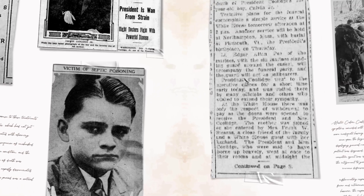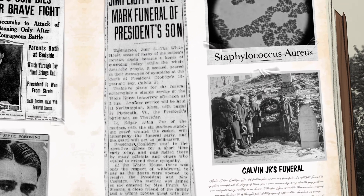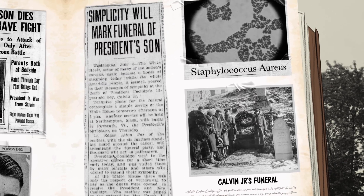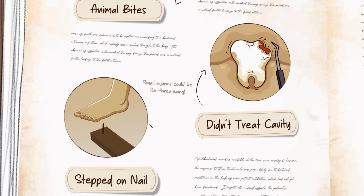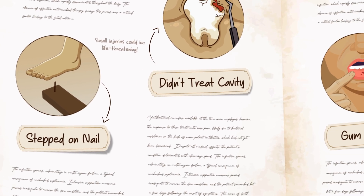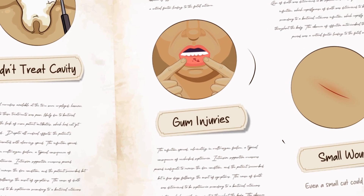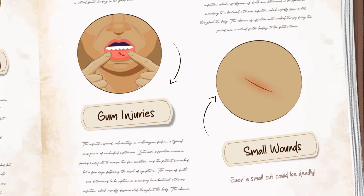A simple staph infection developed from a blister, leading to sepsis. Even though Calvin Jr. was the president's son, there was no medicine to save him. Deaths from infection were common at the time — even small wounds could become a life-or-death ordeal. Just four years later, penicillin was discovered, a breakthrough that could have saved Calvin Jr.'s life.